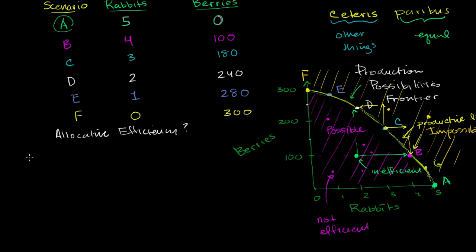To do that, I will review a little bit from the last video. In the last video, we talked about the marginal cost of each incremental rabbit — or we said the opportunity cost of each incremental rabbit. And the opportunity cost of one incremental unit really is just the marginal cost. So let's write out these different scenarios.